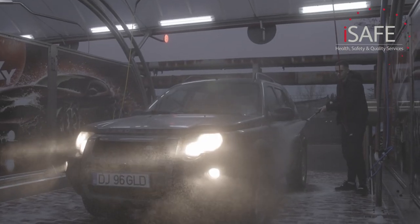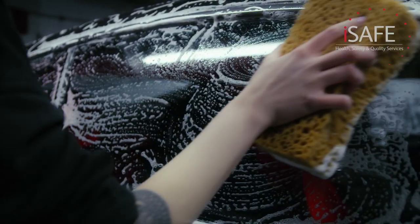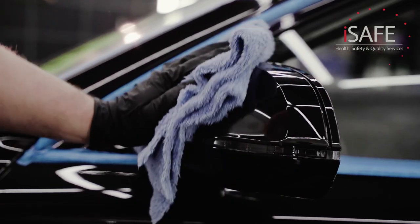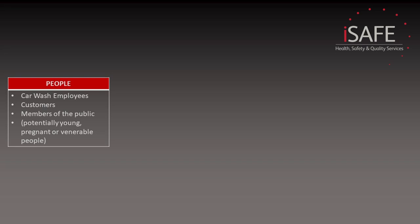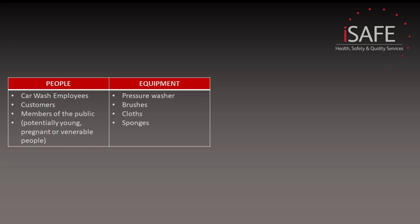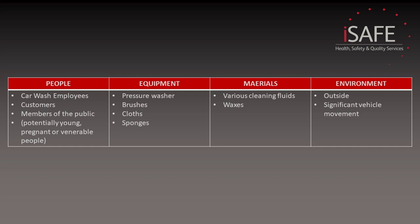Let's start with looking at PME. The process is: a car drives in, it's blasted with a pressure washer to get the thick dirt off, cleaning fluids are applied to the car using a sponge, then we blast it off with the pressure washer again, and the car goes to be waxed and polished. We then take payment and the car drives away. The people involved are going to be you, your colleagues, the people who are having their car washed, and members of the public in general — including in this case young, pregnant or vulnerable people. The equipment is your pressure washer and an assortment of brushes, sponges and cloths. The materials are going to be cleaning products and waxes, and the environment is going to be outside with a significant amount of vehicle movement.